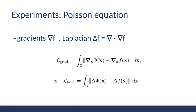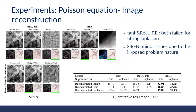Next, we solve the Poisson equation with SIREN. Instead of the output of the network, the gradient or Laplacian of the network is supervised. Only SIREN reconstructs images much more correctly than all other approaches using the gradient, as shown in the quantitative results. It is also the only one that fits the Laplacian well.